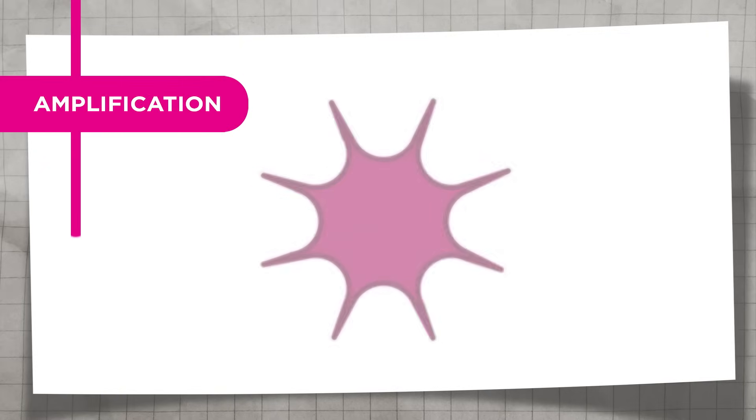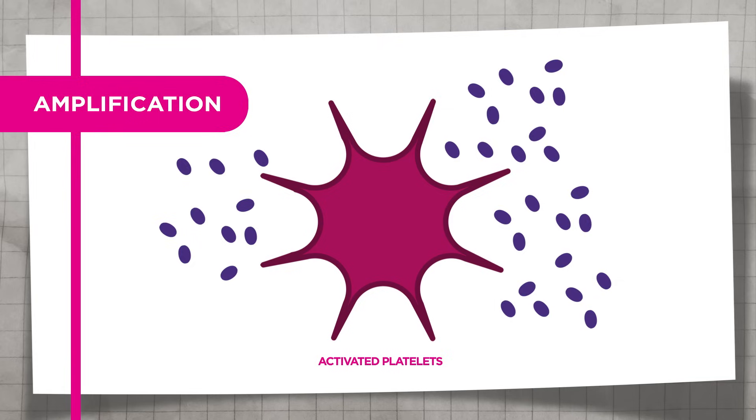This thrombin fully activates platelets and triggers a cascade of clotting factors that activate each other, culminating in factor 10a-mediated generation of a larger burst of thrombin production on the platelet's surface.